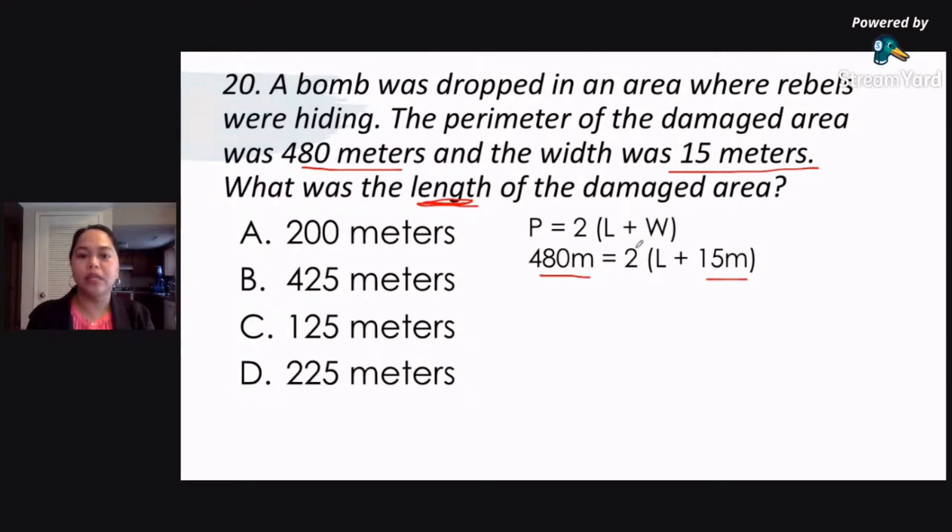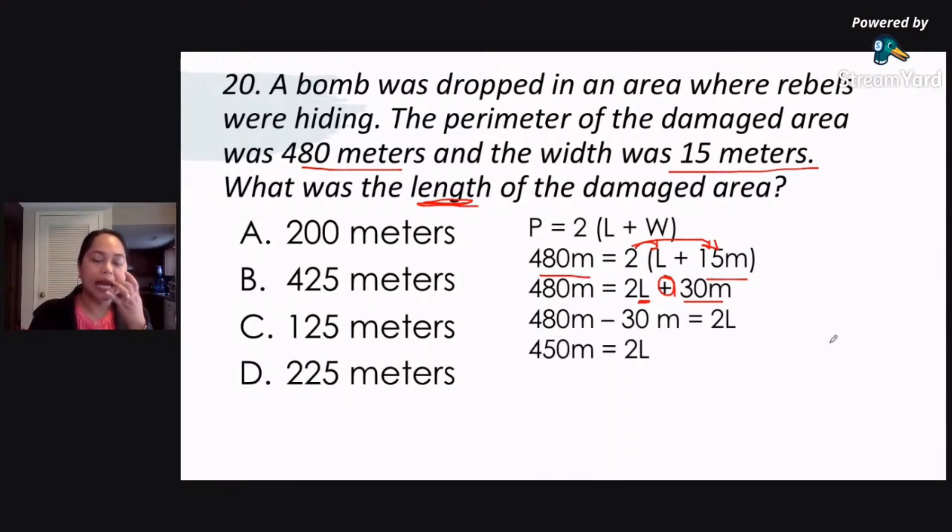So what we do first here is we distribute 2 here. Multiply the 2 to the numbers or variables that we have inside the parentheses. So we are given 480 equals 2L. 2L came from 2 times L. Then we have 2 times 15 meters, that gives us 30 meters. Now same thing we did before. All with a variable, we'll put on one side, and those without L, without a variable, on the other side. So we have 480 meters minus 30 meters. As you can see, from positive it becomes negative. So that's 480 meters minus 30 meters equals 2L. So 480 minus 30 gives us 450 meters equals 2L.